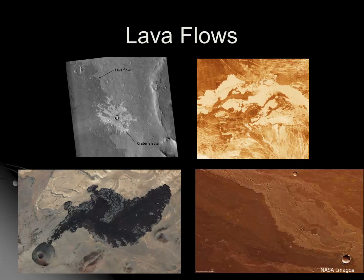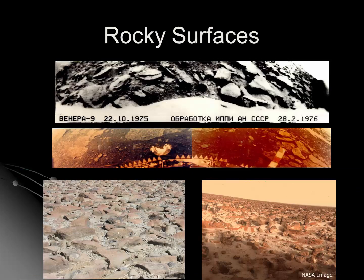Of course, if all four of these planets have volcanoes, it comes as no surprise that they all have lava flows. Here we can see lava flows on Mercury and Venus. The one in the lower left is from SP Crater in northern Arizona, and the one in the lower right is a volcanic lava flow on Mars.